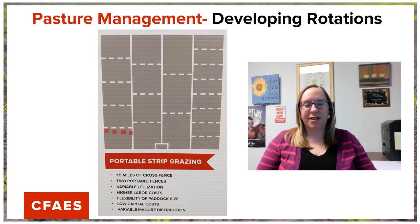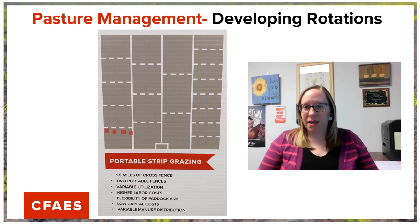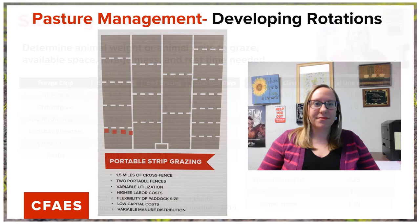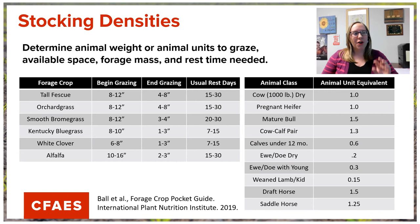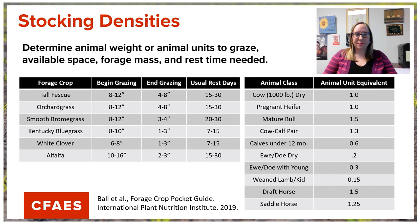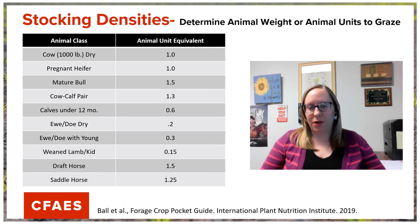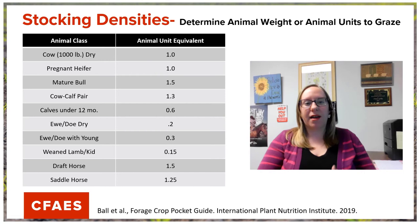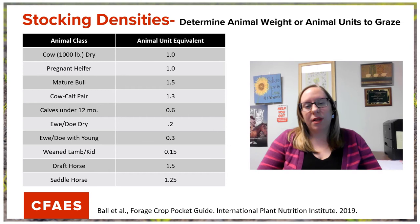Next we'll cover information to help you determine appropriate stocking densities for those rotational units. We're going to look at how we can decide animal units based on animal weight and the needs of our forage crops. The chart shown defines animal unit equivalence. When you read publications on grazing, you may often see the animal unit equivalent term — what we're really talking about is comparing animals of different classes and different species to determine stocking rates.